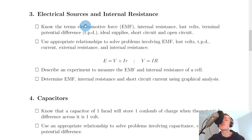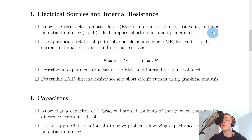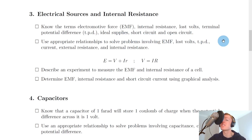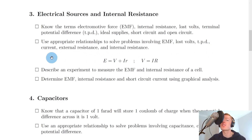Next, for section three, we have electrical sources and internal resistance. Firstly, you need to know the terms: electromotive force (EMF), internal resistance, lost volts, terminal potential difference (TPD), ideal supplies, ideal circuit versus a real circuit, a short circuit, and an open circuit. These are definitions you need to learn and terms you need to be able to use. It then says to use appropriate relationships to solve problems involving EMF, lost volts, terminal potential difference, current, external resistance and internal resistance.